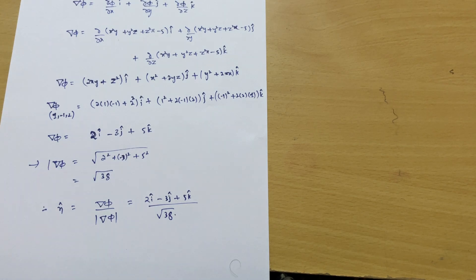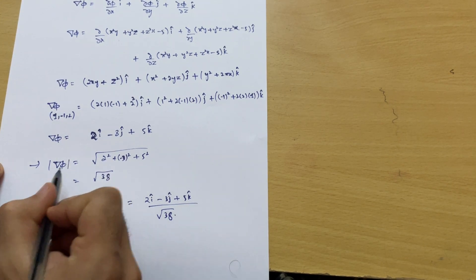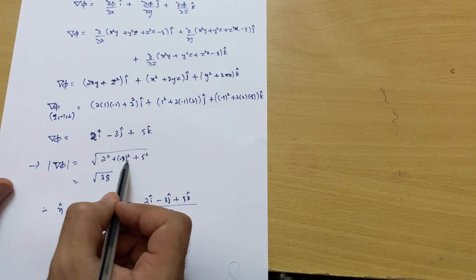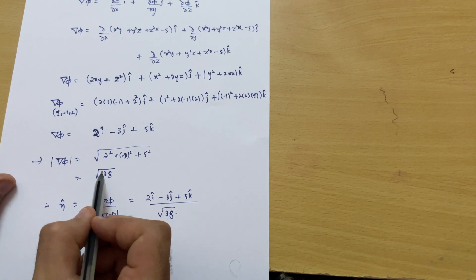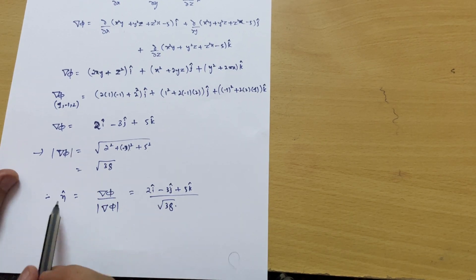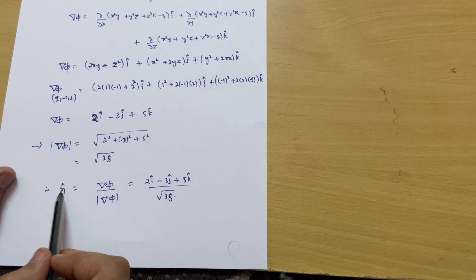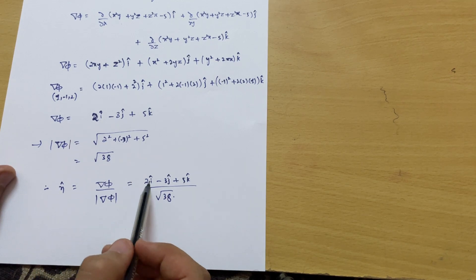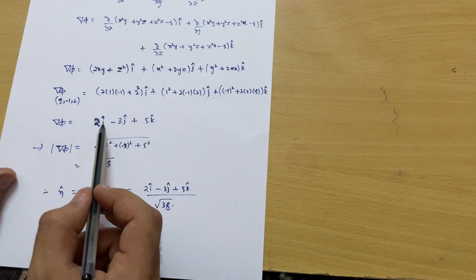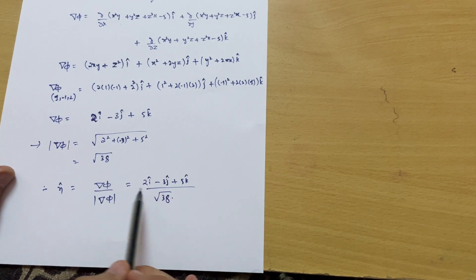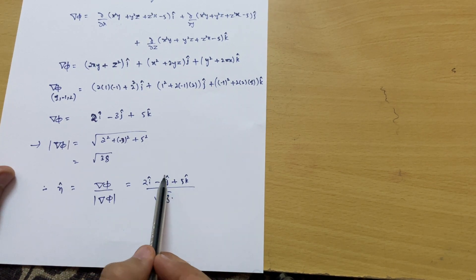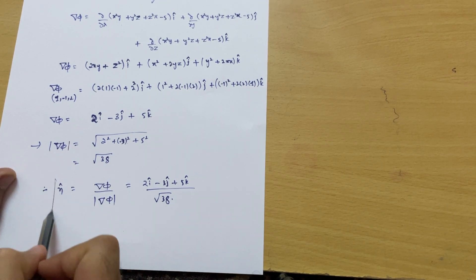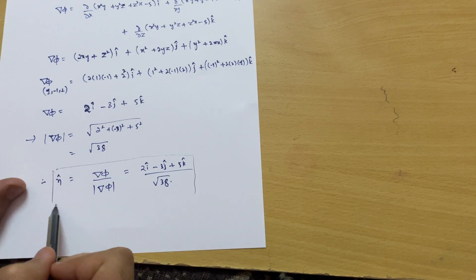Now we calculate |∇φ| for the unit normal vector. |∇φ| = √(2² + (−3)² + 5²) = √(4 + 9 + 25) = √38. The unit normal vector n̂ = ∇φ / |∇φ| = (2î − 3ĵ + 5k̂) / √38. This is the answer for this question.